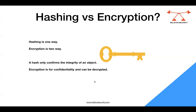Hashing is the name of an algorithm where you are calculating the status of particular data at a particular point in time, and that is in the form of a fixed-length string. That fixed-length string cannot be converted back to the original data — it can only tell you whether the data has been modified or not.